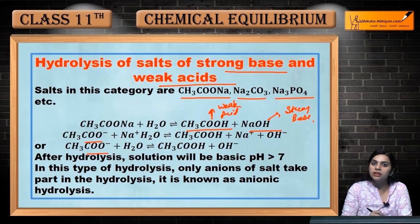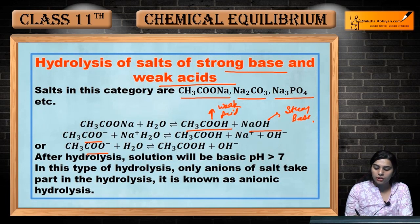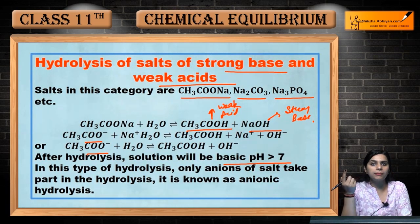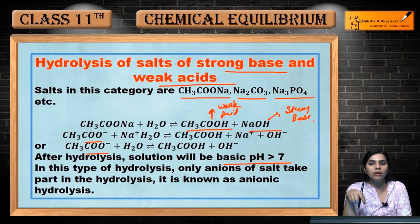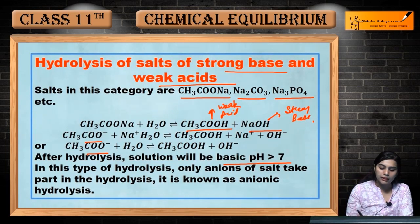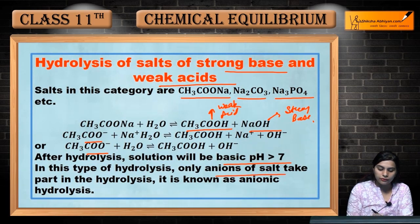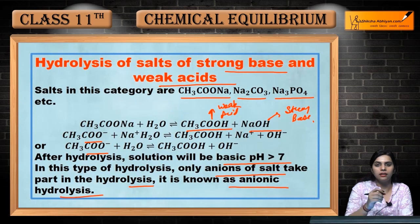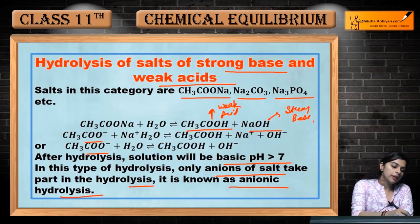Yeh bhi negatively charged hai, toh anionic se ban raha hai. After hydrolysis, solution will be basic, that is pH will be greater than 7. Last wale mein jab strong acid tha toh solution acidic bana tha, pH less than 7 tha, aur ismein pH greater than 7 hoga. In this type of hydrolysis only anions of salt take part — it is known as anionic hydrolysis.